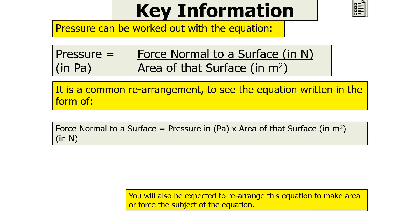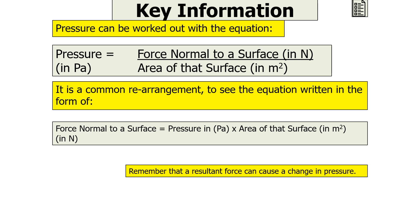A common rearrangement is the force normal to a surface in newtons equals the pressure in pascals times the area of that surface in metres squared. This tells us that a resultant force can cause a change in pressure. We can write this as: the resultant force in newtons equals the change in pressure in pascals times the area of the surface the force acts upon in metres squared.